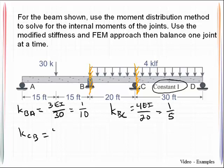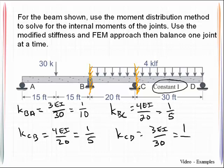K_CB, 4EI over L, that gives me one-fifth. And K_CD, 3EI over L gives me one-tenth.